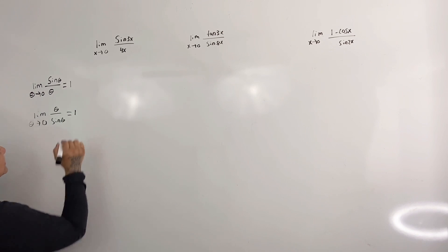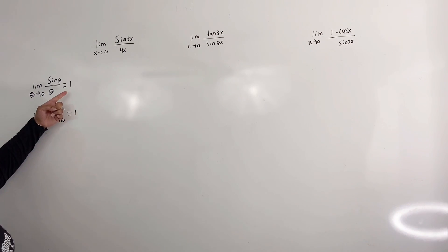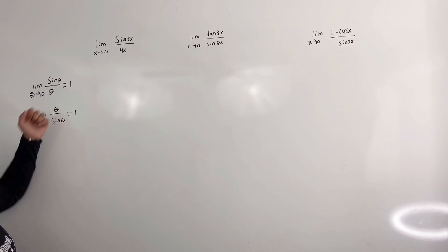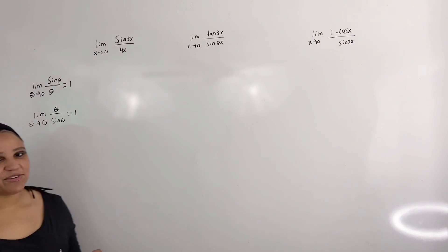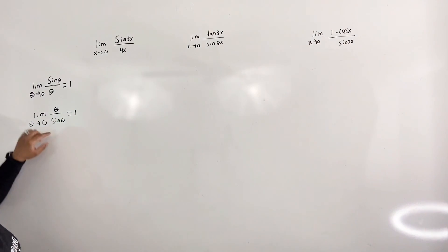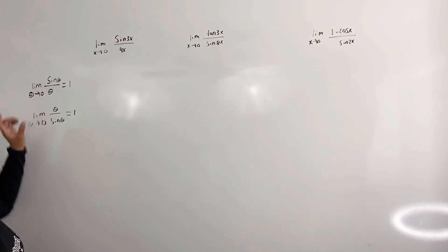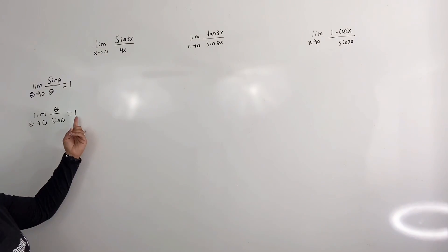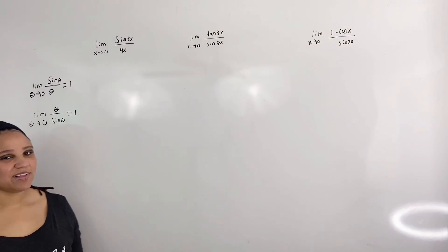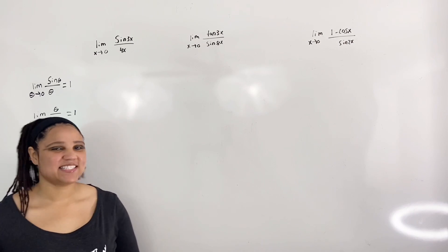We know this because, since the limit here does not equal 0 or infinity, when we take the reciprocal of the ratio, we can just take the reciprocal of the limit. Let us look at our first example.